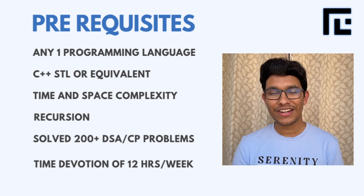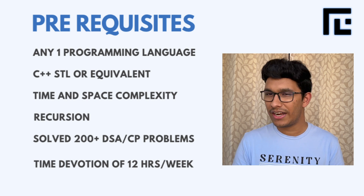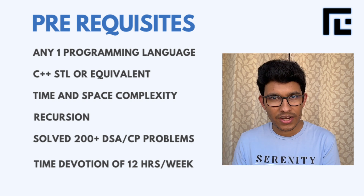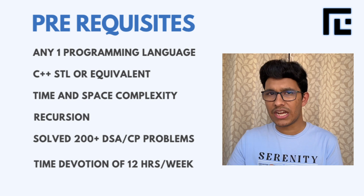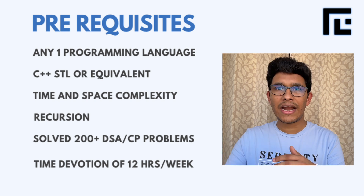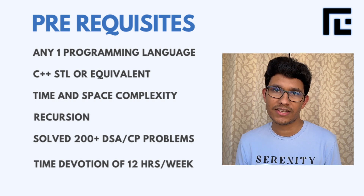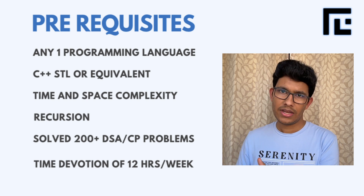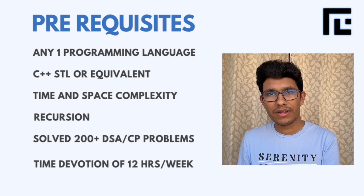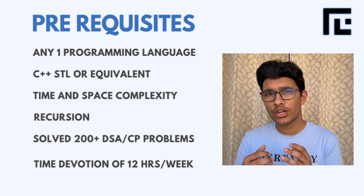Let's touch upon the prerequisites. First, we expect you to know at least one programming language — it could be C++, Java, Python, or any other. We also expect you to know C++ STL, or its equivalent in Java or Python. Next, we expect you to understand time and space complexity — given a random problem or algorithm, you should be able to look at the code and identify its time and space complexity. We also require a good knowledge of recursion, because essentially most of dynamic programming is just about optimizing recursion. In terms of time devotion, we also expect you to dedicate at least 12 hours a week.